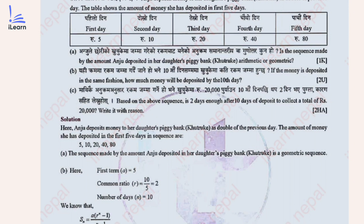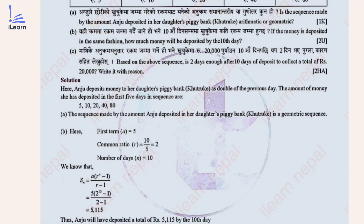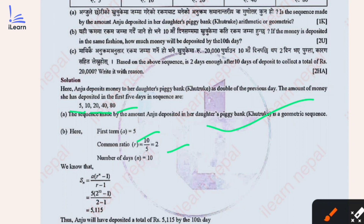If the money is deposited in the same fashion, how much money will be deposited by day 5? The first term a = 5, common ratio r = T2/T1 = 2. For a geometric series, we need: a, r, and number of terms. The sum formula for a geometric series is: S = a(r^n − 1) / (r − 1). We use this to find whether 10 days of deposit plus 2 more days is enough to collect Rs 20,000.